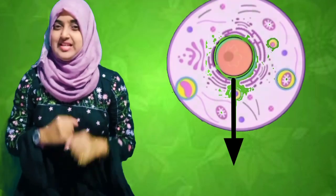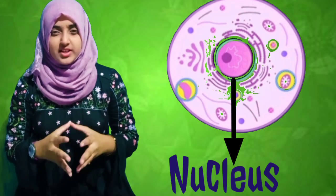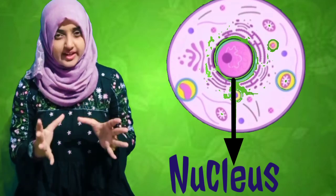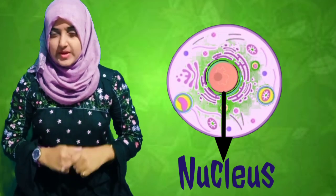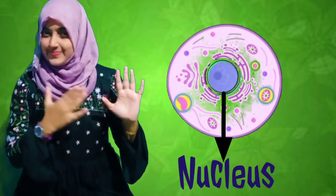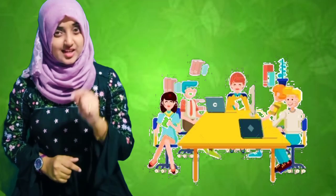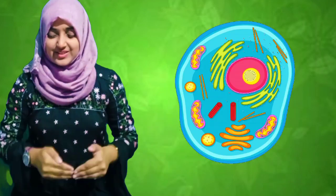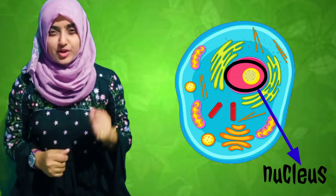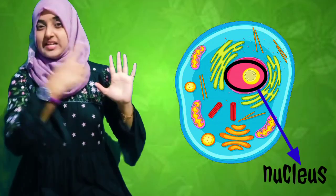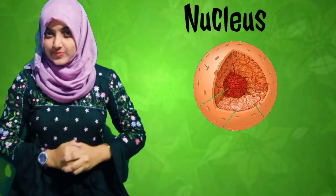Let us invade the mastermind — the control center of the cell — that is the nucleus. The nucleus is a spherical-shaped structure located at the center of the cell and it controls all the functions of the cell. Just like running a company requires an efficient leader who controls and guides employees, our nucleus is like a leader who controls and regulates the functions of the other components of the cell.